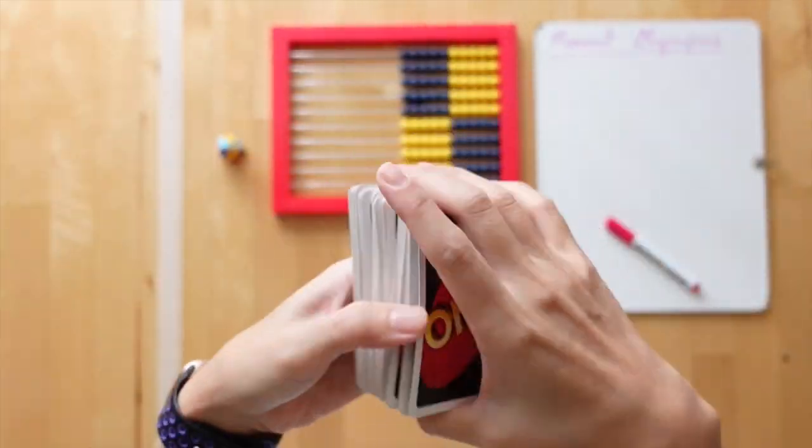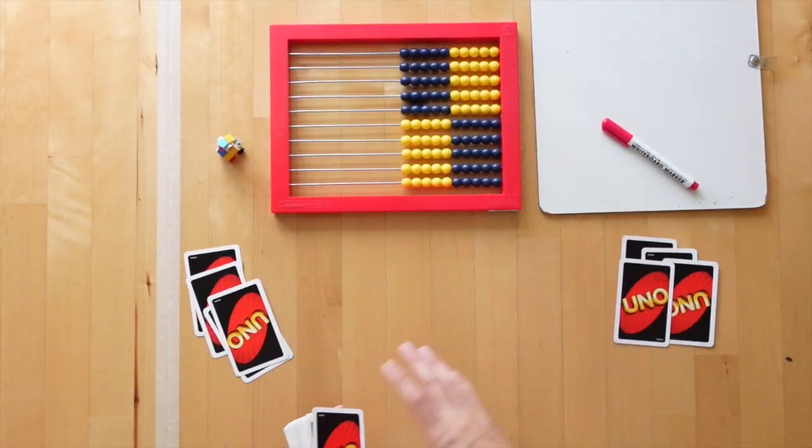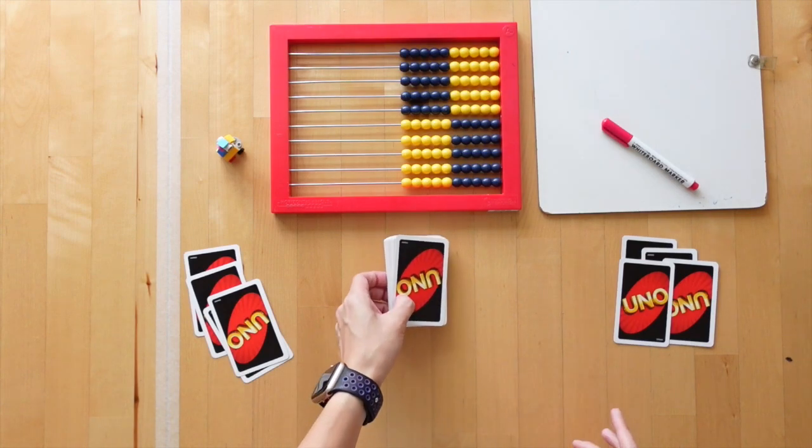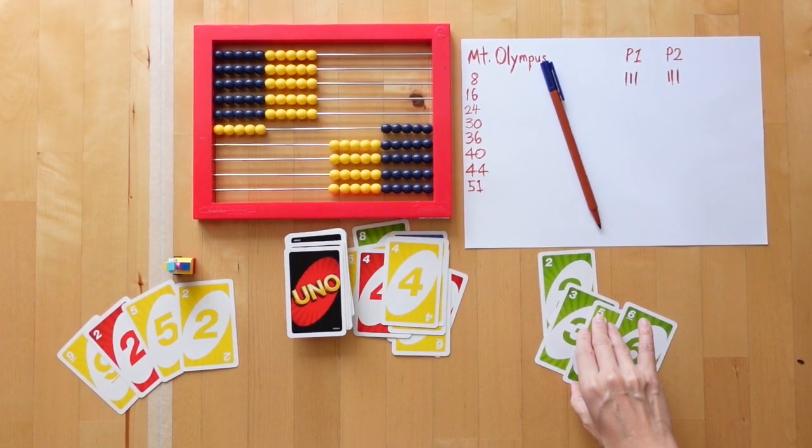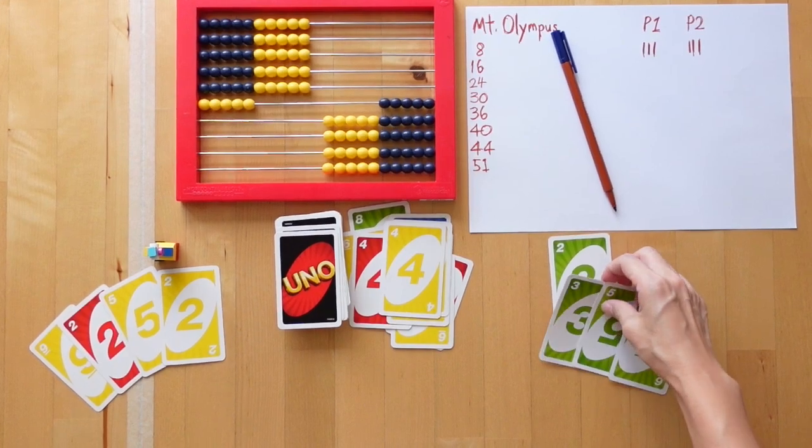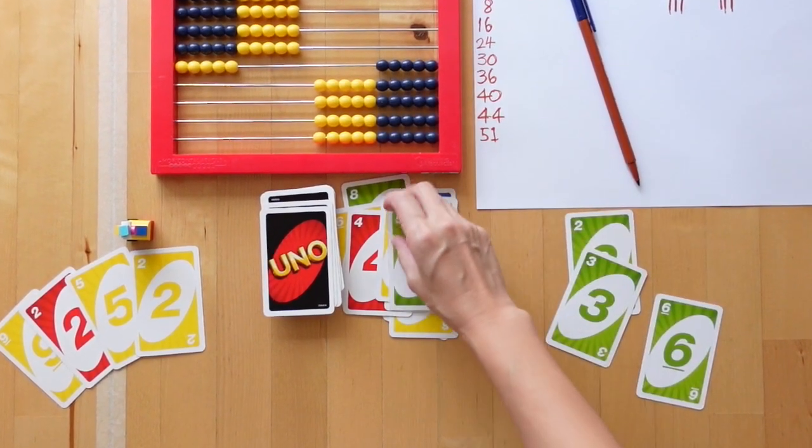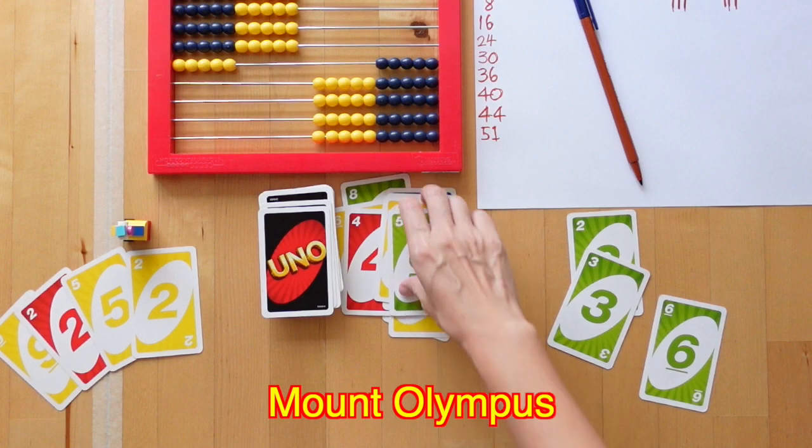So we shuffle the deck and deal four cards to each player. The rest of the cards form the draw pile in the center. On a turn, a player plays a card from their hand onto the discard pile. Henceforth, we're going to call this Mount Olympus.